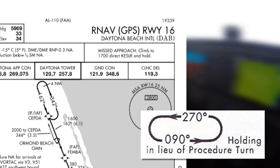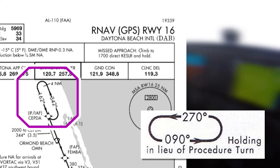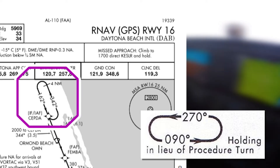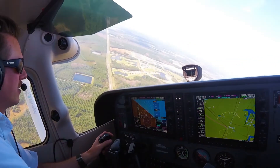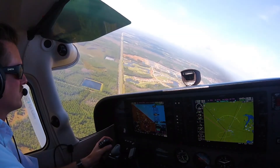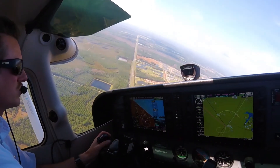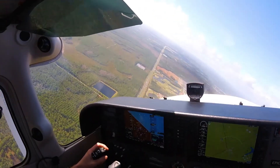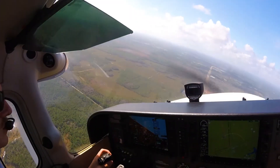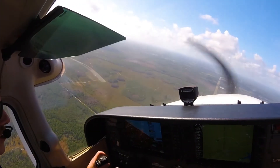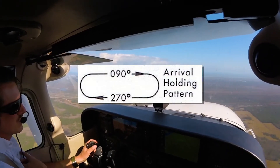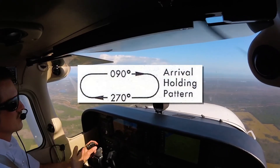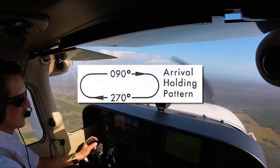Holding in lieu of a procedure turn is depicted as a solid bold line on an instrument approach. In practice, holding in lieu is not really a holding pattern but a method by which to turn around. When assigned a hold in lieu, the maneuver must be completed within the distance specified in the profile view of an instrument approach procedure.